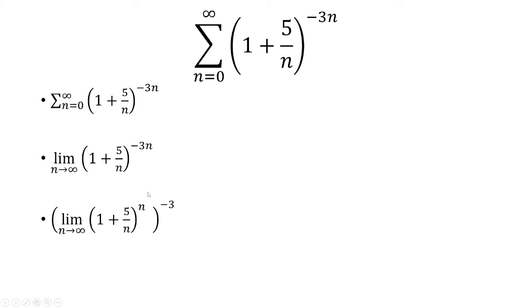I can rewrite this as (1 plus 5 over n) raised to the n, and then raised to the negative 3 power, because an exponent to an exponent you just multiply.